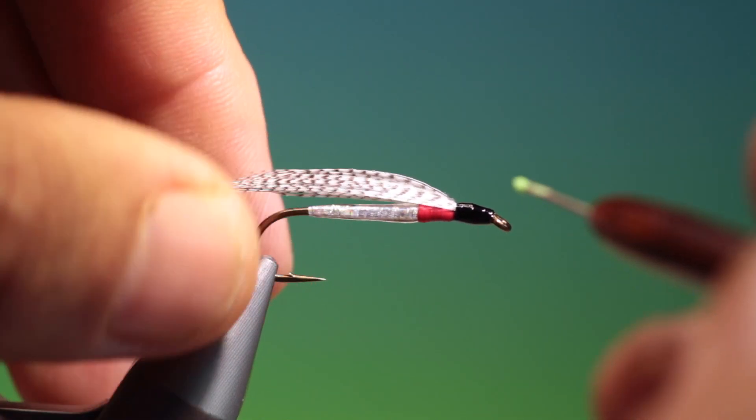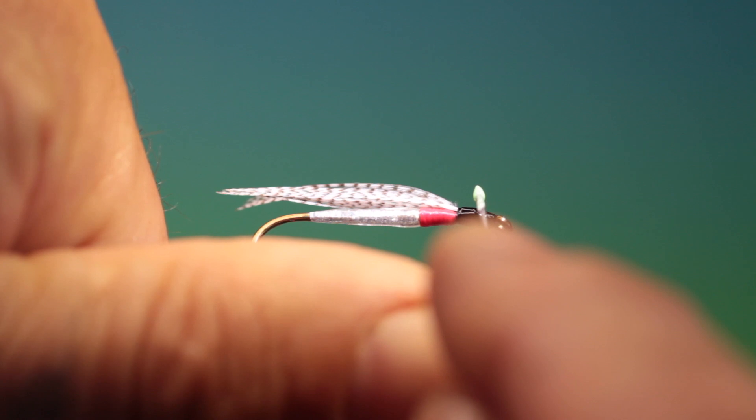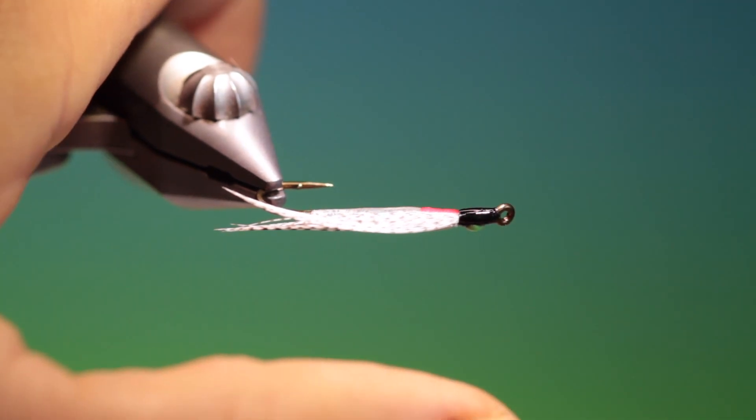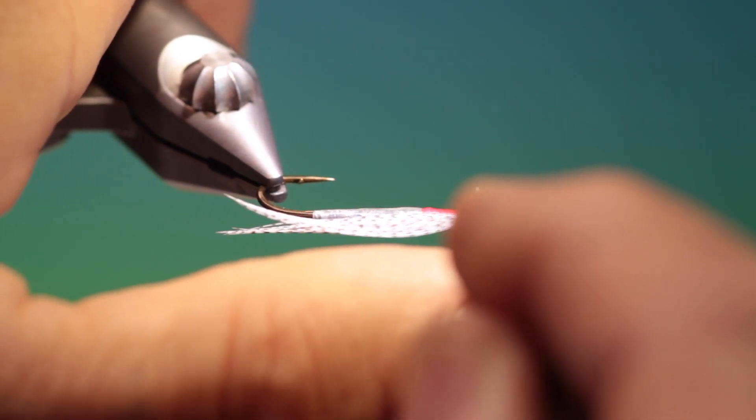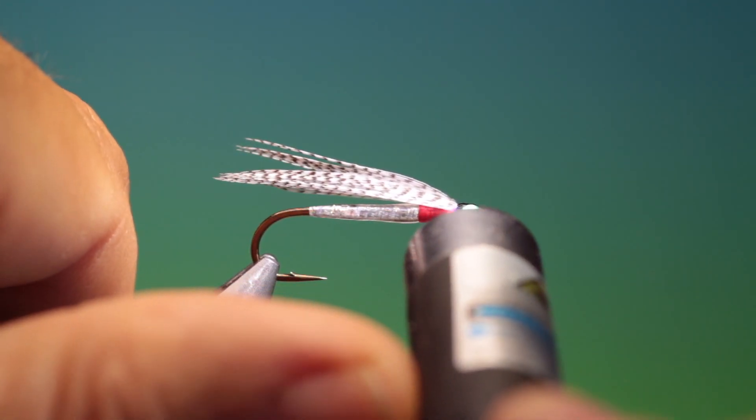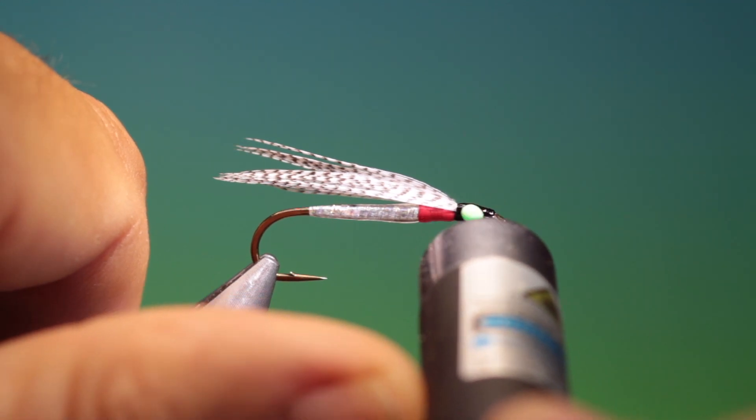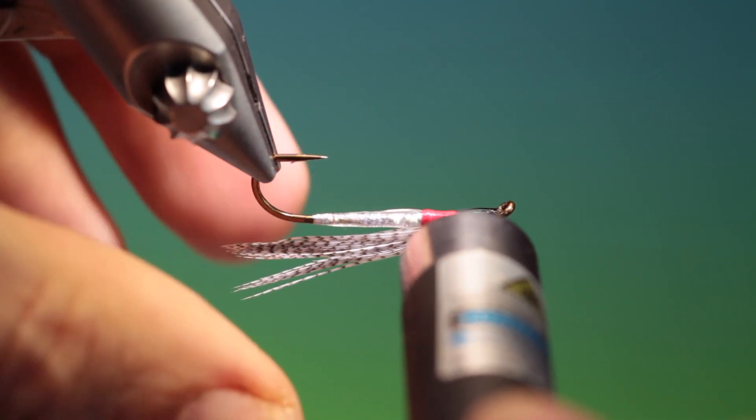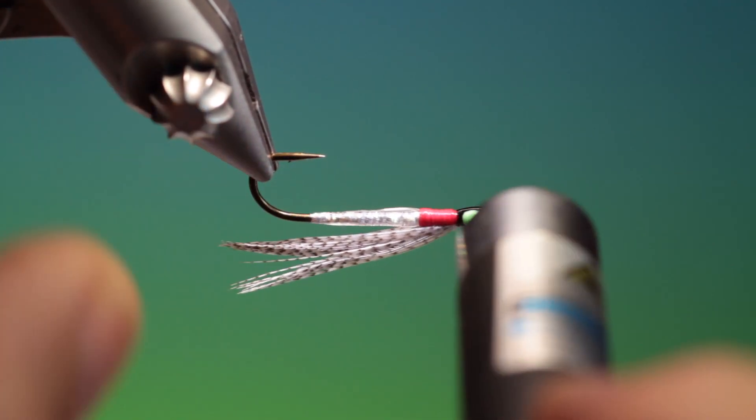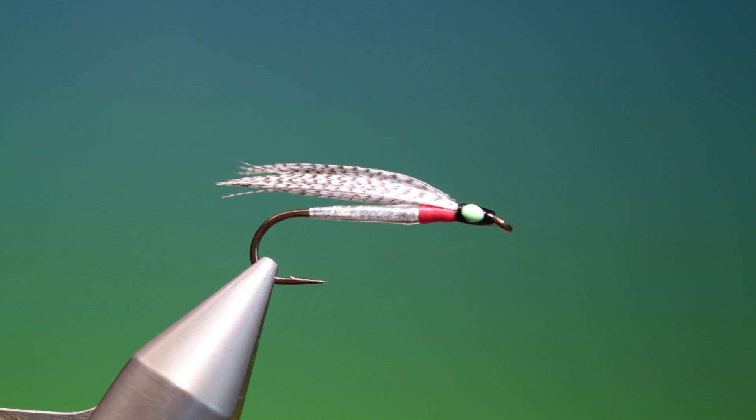I've got some glow in the dark green UV resin. Which I just want to put a drop on each side like so. Give that a blast. You can use tape eyes if you wish. Good.